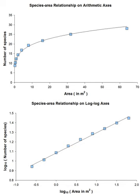Authors have classified the species-area relationship according to the type of habitats being sampled and the census design used. Frank W. Preston, an early investigator of the theory of the species-area relationship, divided it into two types.